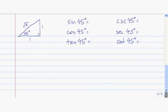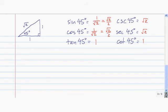Here's one for you to try. Use this right triangle with an angle of 45 degrees to evaluate the six trig functions at 45 degrees. Press pause while you work on it. These are the answers you should have gotten. Sine of 45 degrees — opposite over hypotenuse — is 1 over root 2. If we rationalize the denominator, we can write that as root 2 over 2.